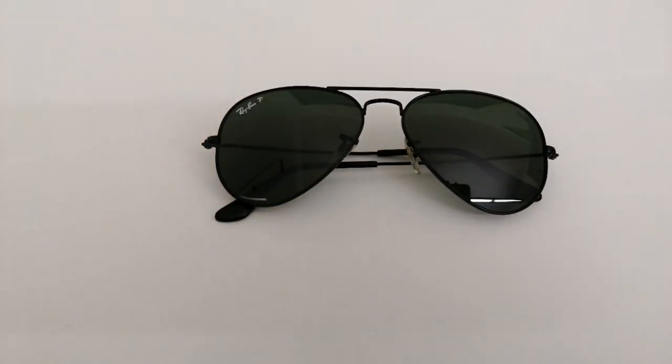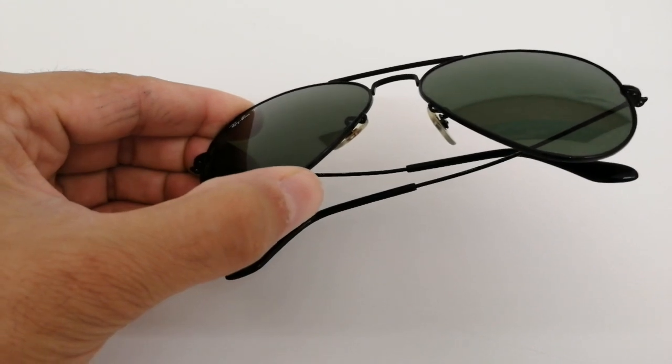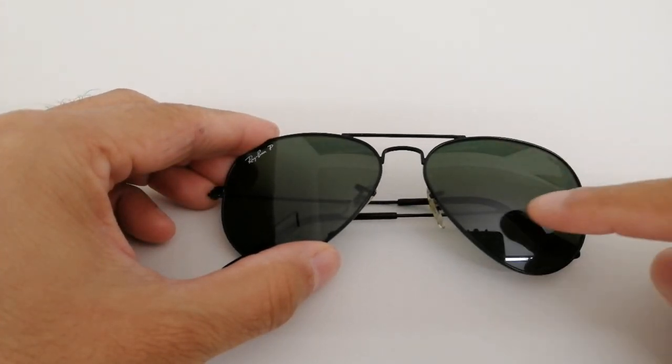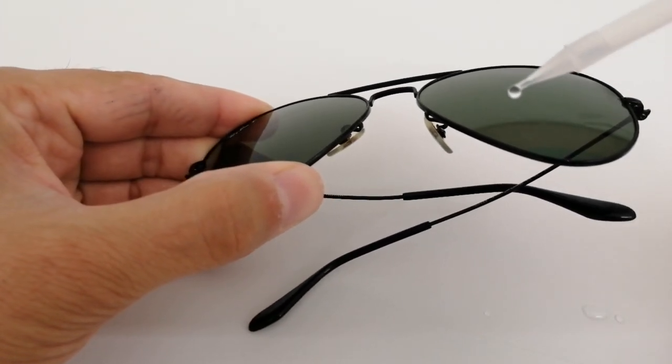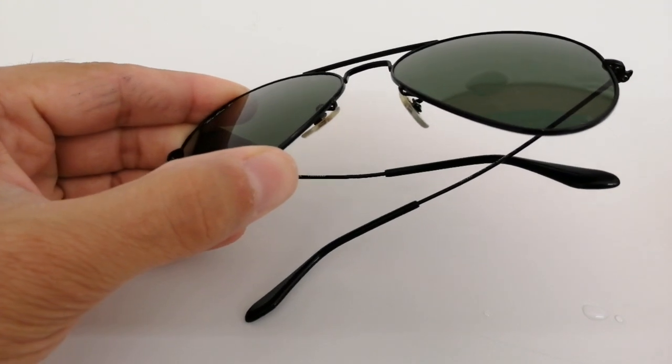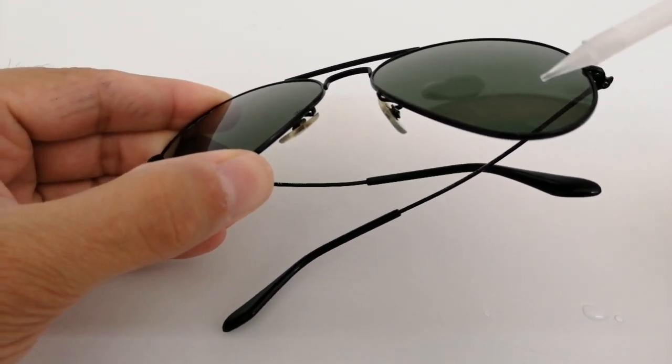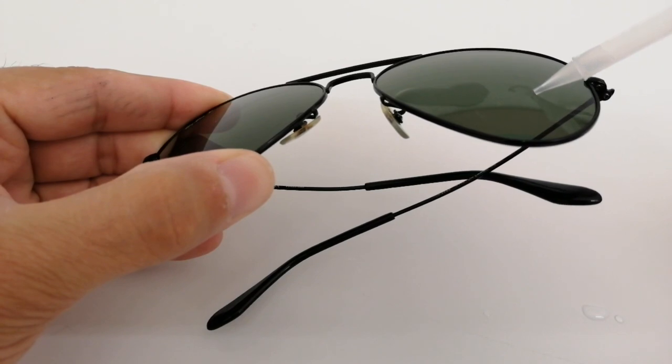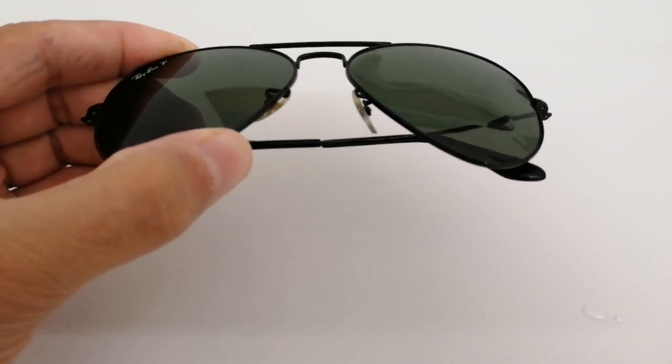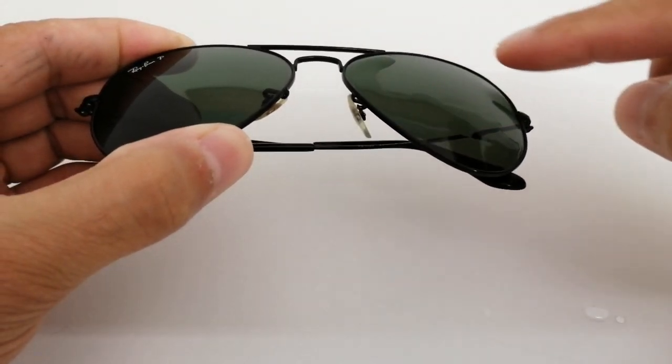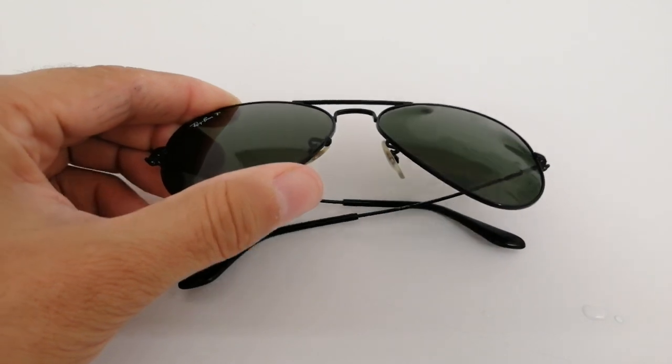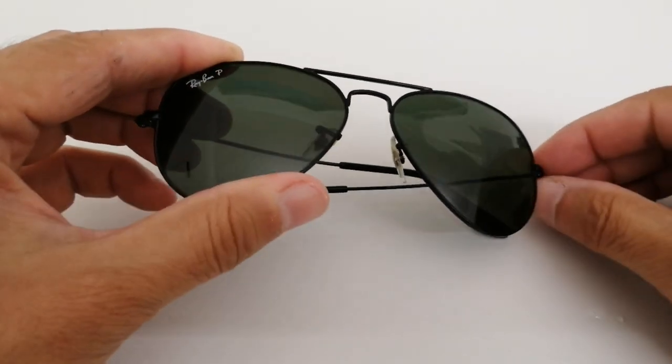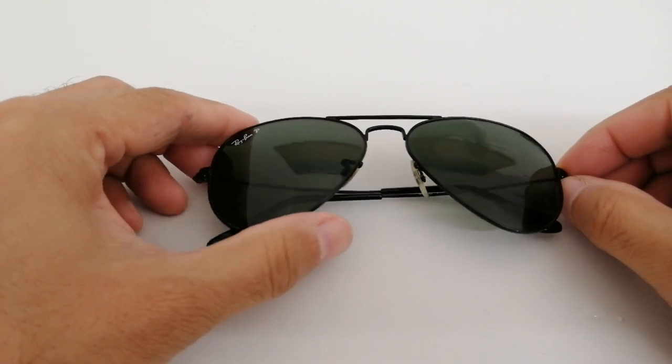So question number one: why does liquid, or in our case water, want to sit on the surface of your glasses? That's because it has a low contact angle. For example, did you just see what happened when I dropped the water on the surface? It's completely wetting the surface of the glasses, making a very low contact angle.